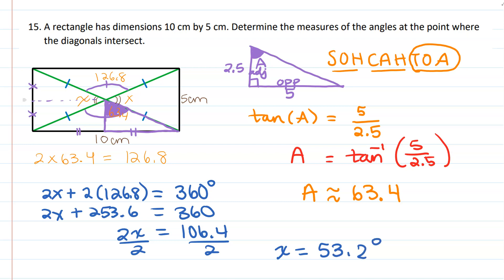So this right here is going to be 53.2 degrees. And we have found the angles where the diagonals intersect. All right, that is it. And we are using trigonometry here because we are looking for an angle and we have two sides. And the thing that relates angles and the sides within a right triangle is right triangle trigonometry.